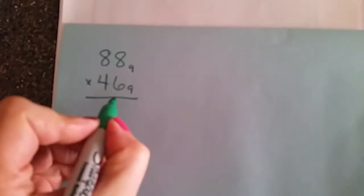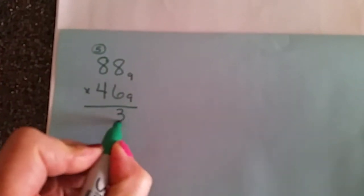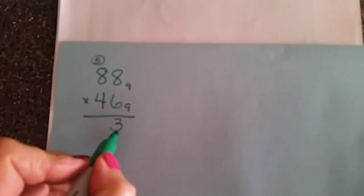So we begin with the 1's place: 8 times 6, which would be 48. Now 48 is 5 groups of 9 plus 3 leftovers. So 5 groups of 9 would be 45 plus the 3 would be 48.